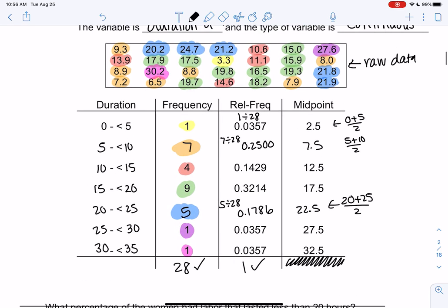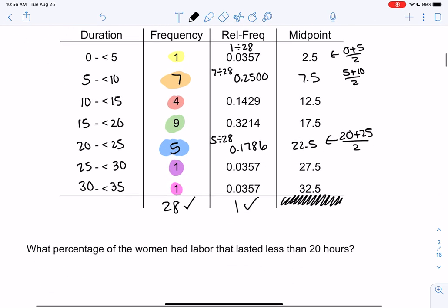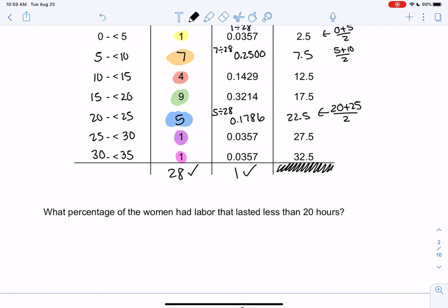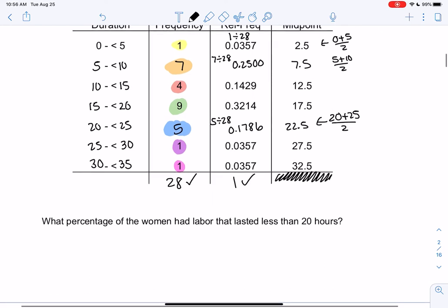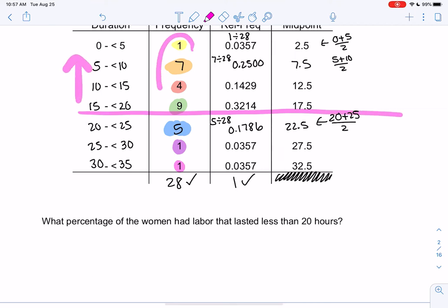So now that we have a table that's easier to read, let's use the table to answer a question. The raw data is really hard to find patterns, but maybe we can find patterns a little bit better. Maybe someone's curious what percentage of the women had labor that lasted less than 20 hours. I'm going to go to the table, less than 20 would be at 20 and less than would be above. So I'm going to take all of these frequencies and add them up. So 21 women had labor less than 20 hours.